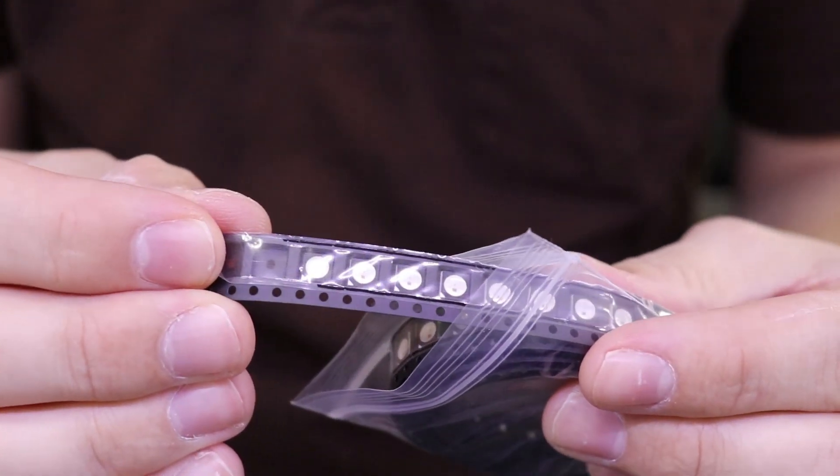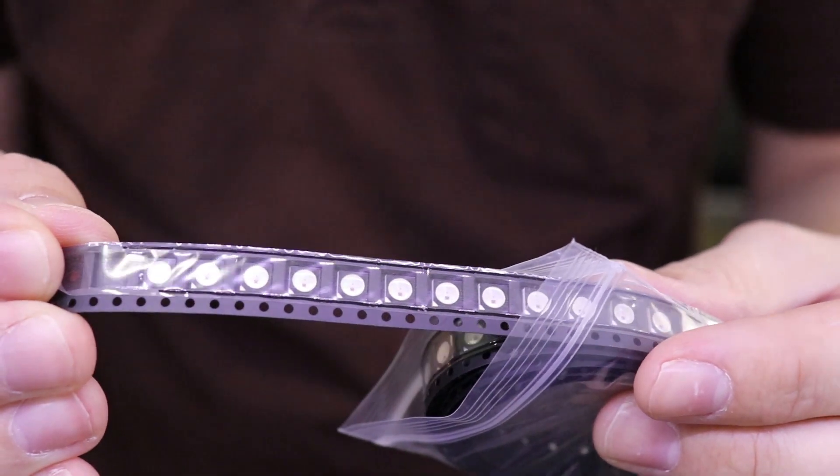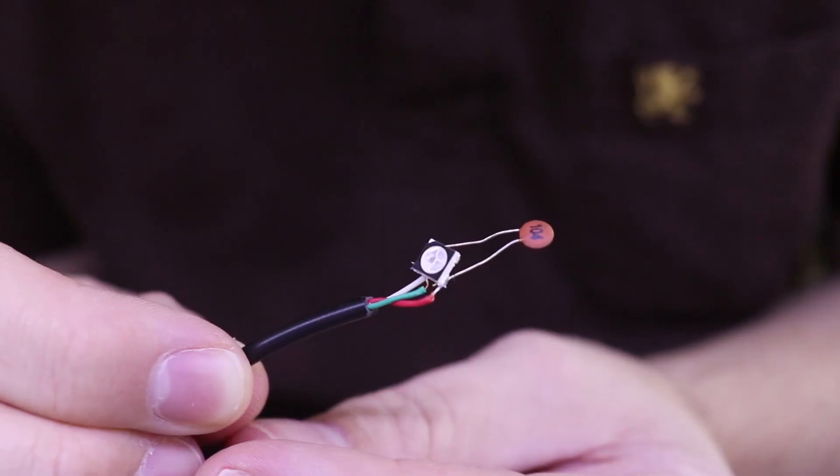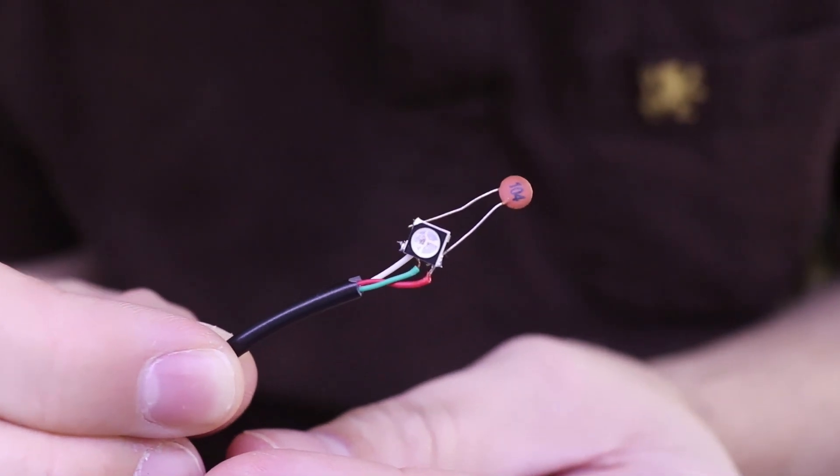I went ahead and bought these in a surface mount package which came in a bundle of 100 for about $9 on eBay. So you can actually put a bunch of these in a string and control each one individually. I spent quite a bit of time messing around with these trying to get them to work and I never actually got these to work.